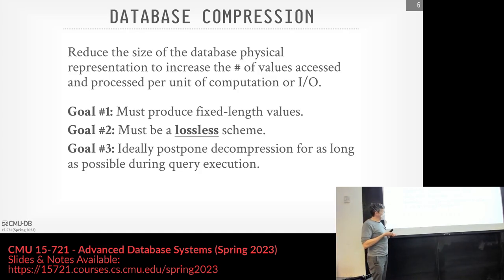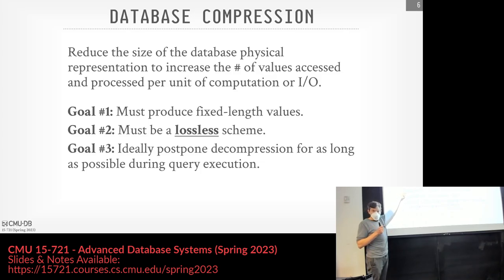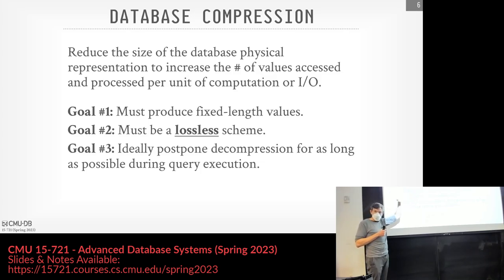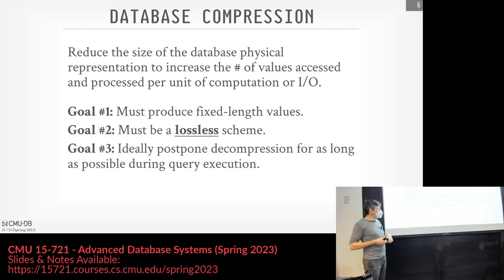Because we're storing things in a column-oriented format, everything has to be fixed-length so we can do simple arithmetic to jump to a given offset. If I want the hundredth tuple in a column, I know how to do the simple math to get exactly where I need. We also want to have a lossless scheme — for any data that goes in, we need to get that same data out. Otherwise people get upset or the database gets corrupted.